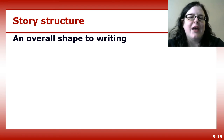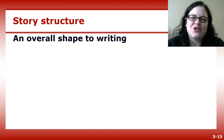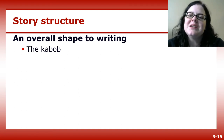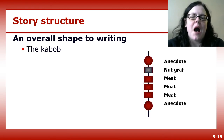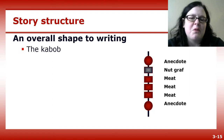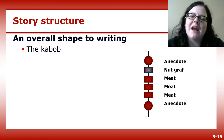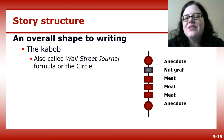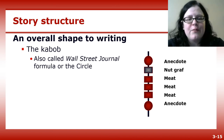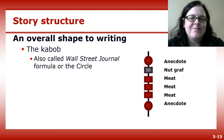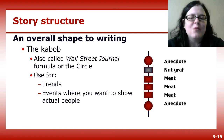If martinis aren't your thing, try the kebab story structure. The story starts out with an interesting anecdote — that juicy tomato at the very top of your kebab. Then you move into the nut graph, like a mushroom. Then you add the meat — as much as you can handle — before following it up with another juicy quote or anecdote. This style is sometimes called the Wall Street Journal formula, or the circle, because it comes back around to the anecdote from the beginning. The kebab works well for stories about trends or events where you want to show actual people.